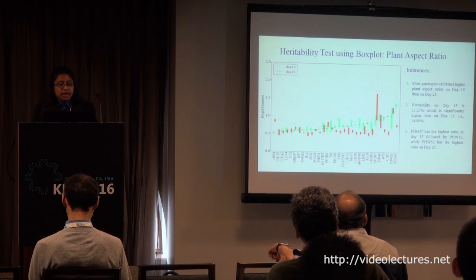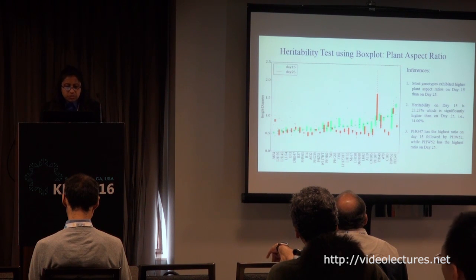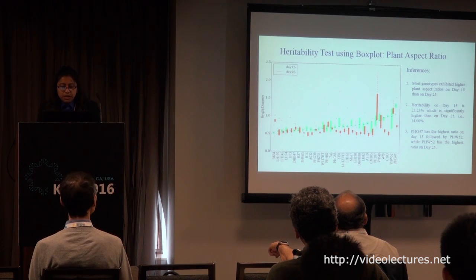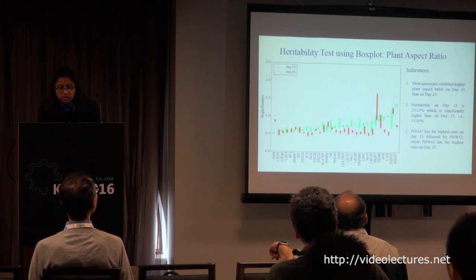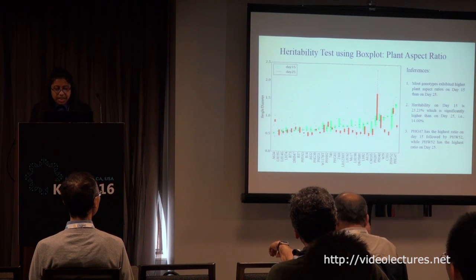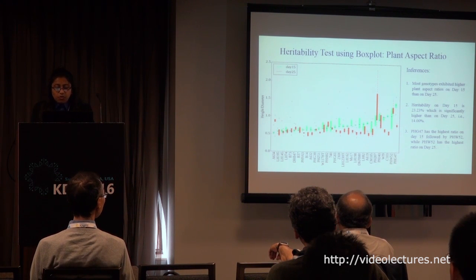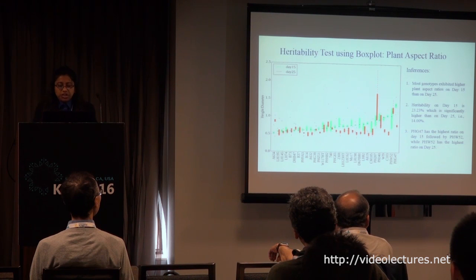We also computed a heritability test for plant aspect ratio using box plots. Most genotypes exhibited higher plant aspect ratios on day 15 than on day 25. P8G47 has the highest ratio on day 15, followed by PHW52, while PHW52 has the highest ratio on day 25.